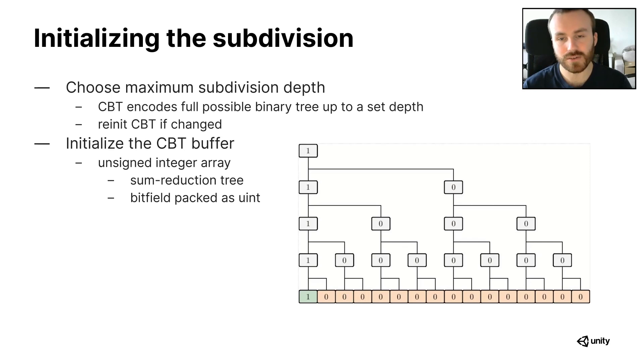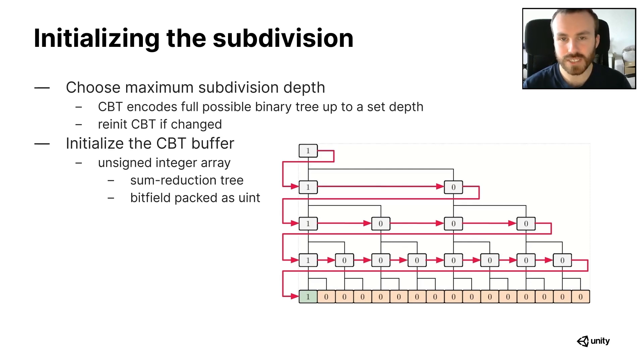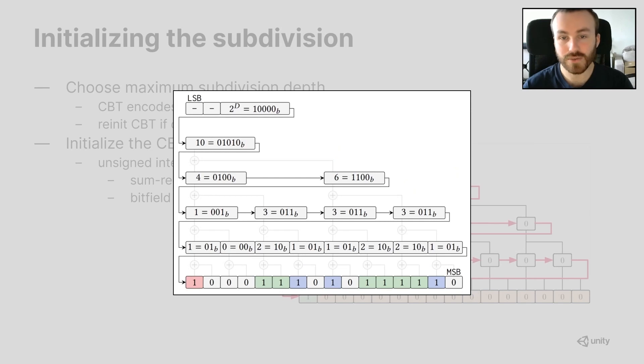As a quick side note, the concurrent binary tree is a pointer-free data structure. In the memory it is simply a flat integer array, and it contains first the sum reduction tree in sequential order like this, and then the rest is the bitfield at the end. And another quick side note I need to add that in practice, concurrent binary trees use an optimized memory layout which allows packing all this data into the least possible amount of bytes.